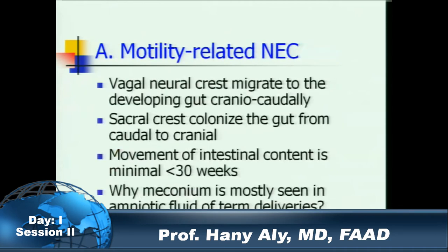If you classify necrotizing enterocolitis according to pathogenesis, the first entity is motility-related NEC. In premature infants, the innervation of the gut starts from above and below simultaneously. The vagal neural crest migrates craniocaudally while the sacral crest colonizes the gut from below upward. At 24 to 25 weeks, there may be neurons in the duodenum and rectum but none in the middle. Movement of intestinal content is minimal before 30 weeks — that's why we don't see meconium in amniotic fluid unless the baby is close to term.